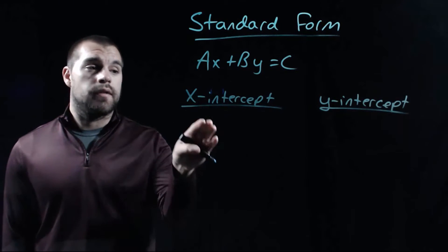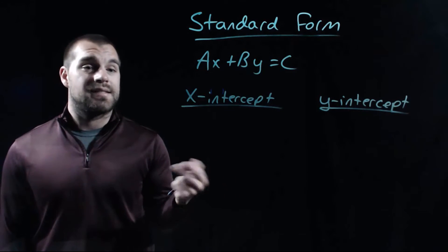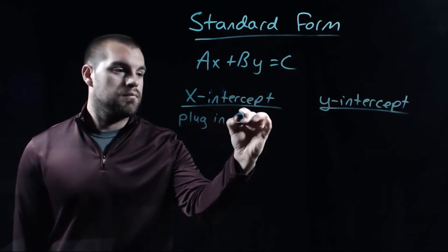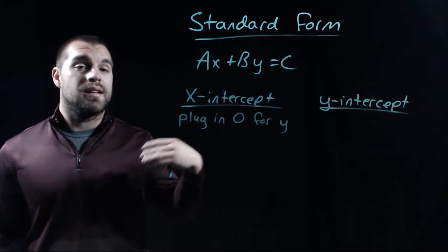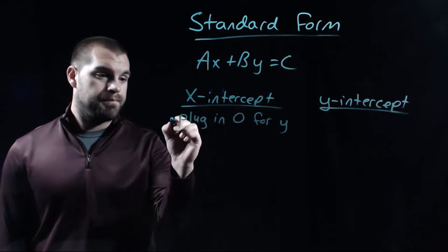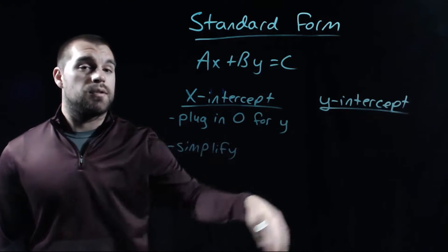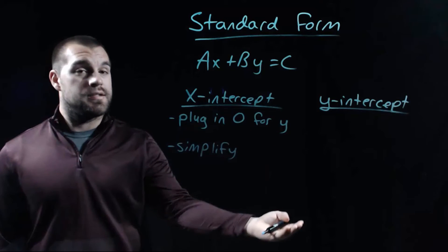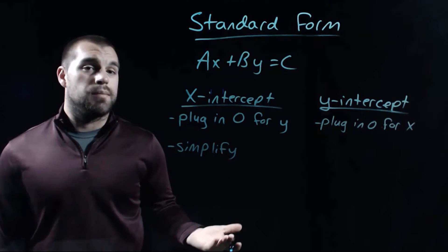The first kind of intercept that we're going to find is called an x-intercept. And in order to find an x-intercept, we're going to plug in a zero for our y-value and then simplify down our equation. If we're going to find a y-intercept, then what we're going to do is we're going to plug in a zero for our x and then simplify our equation down.